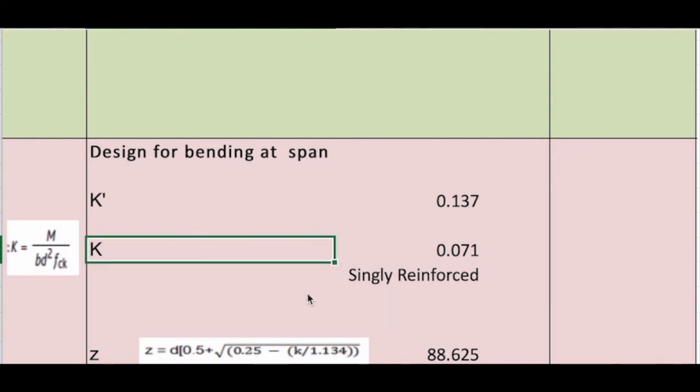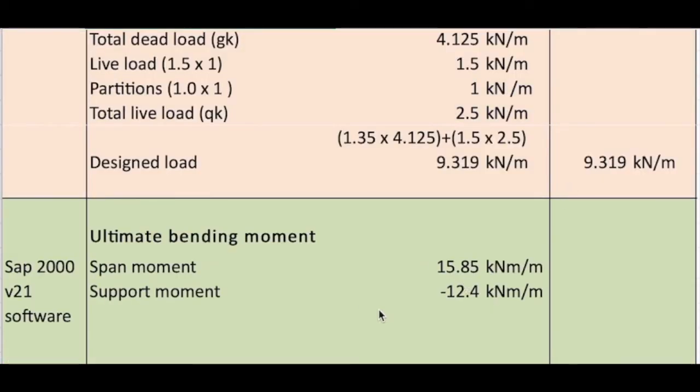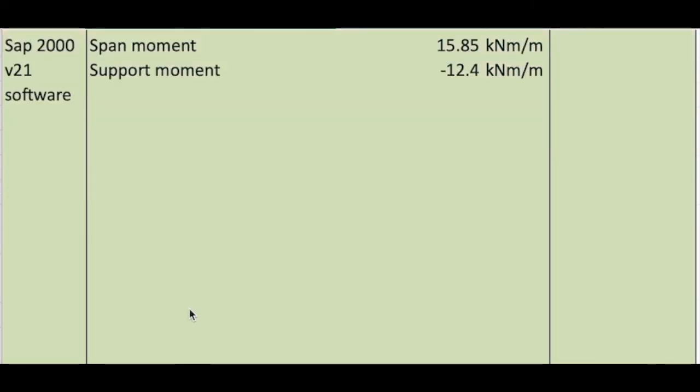So K is equal to M over bd²fck. So M we found, that is for the span, it is 15.85. I am going to design for the span. And b is 1000 mm.